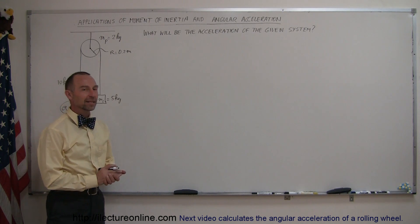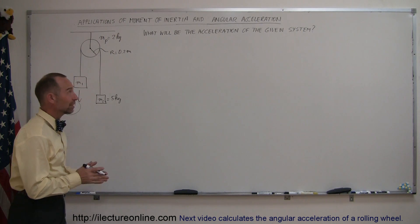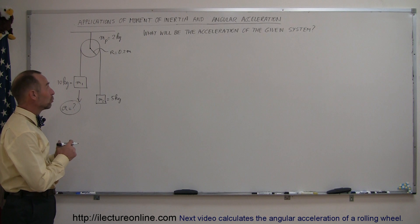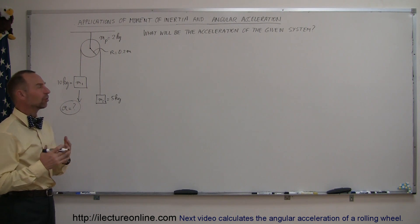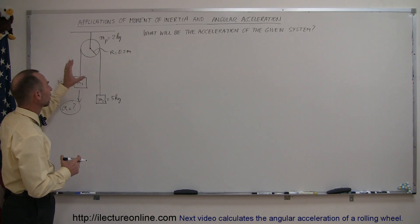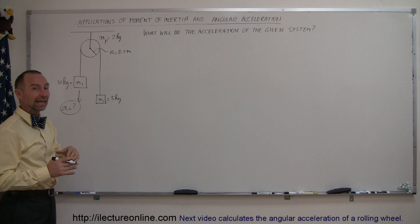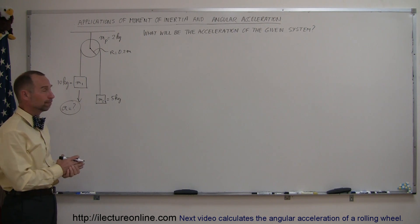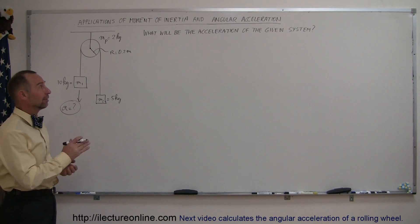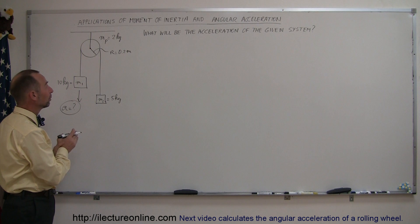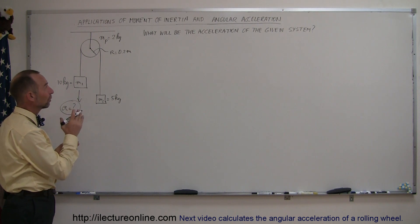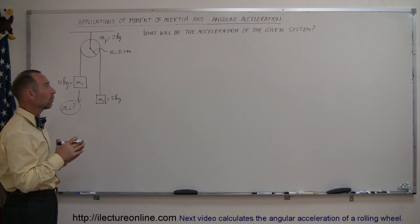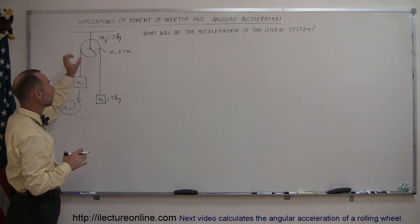Welcome to iLecture Online. Here's a very interesting example — an example of a real pulley system. When we say a real pulley system, what we mean is that the pulley itself has mass and therefore contributes to the motion and acceleration of the system. If you're given a system like this with a pulley and asked what the acceleration will be, that is not as straightforward as before because of the pulley.